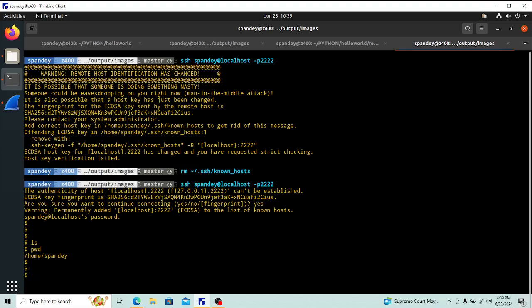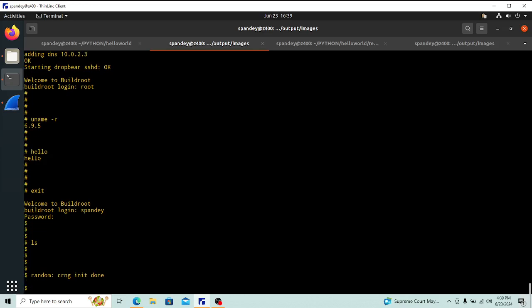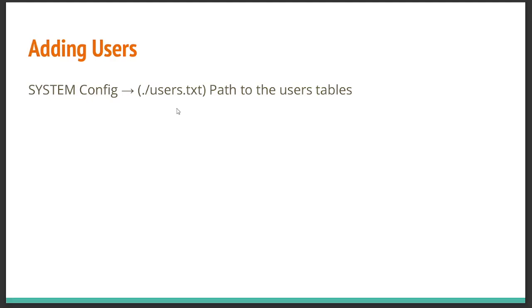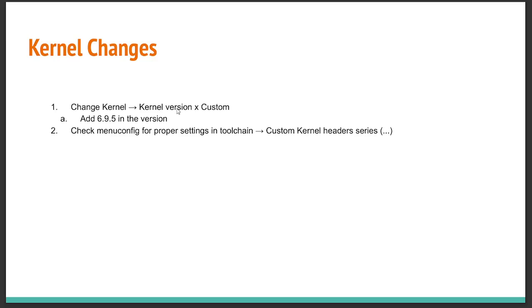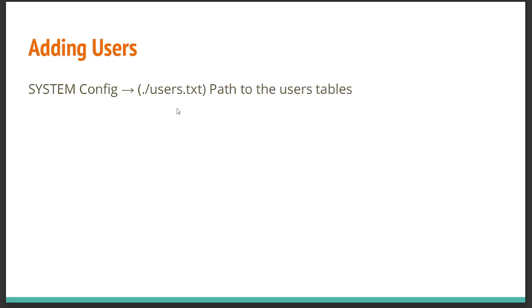Now logged in via SSH, I can do whatever I want — for example, run `hello`. That shows I'm actually logged into my OS on the other side. As a summary: we went through the hello package (a simple C file and how it integrates), made kernel changes using `make menuconfig` to 6.95, and added users via a text file.